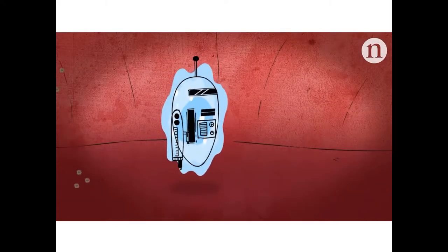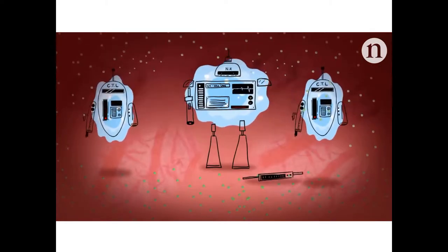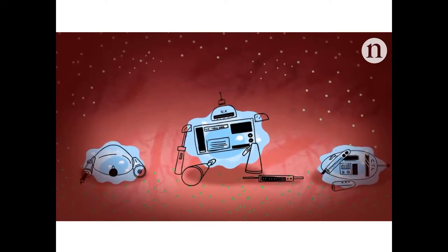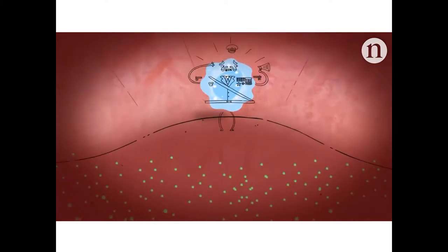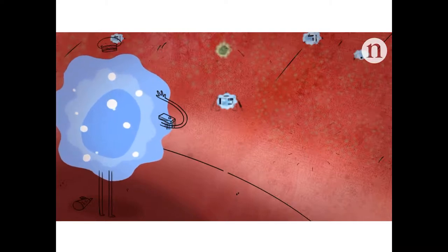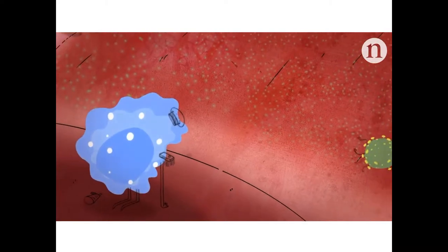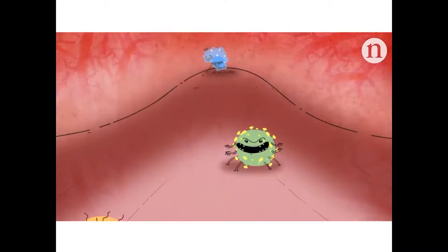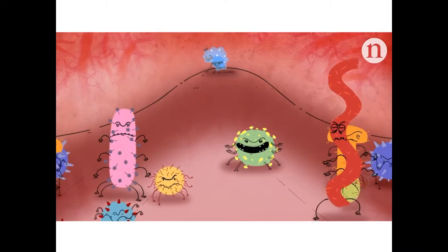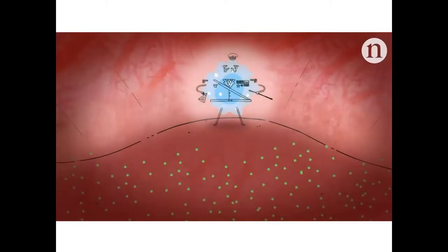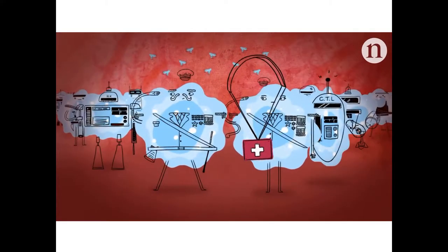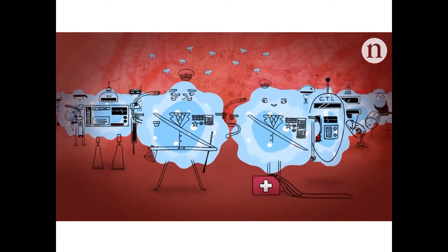Eventually the immune system wears out. Killer T cells, activated for too long, become exhausted and no longer respond to infection. The body also loses the ability to make new helper T cells to replace those killed in the fight, and their numbers plummet. The body becomes immunodeficient — a condition known as AIDS. Without treatment, exposure to otherwise harmless microbes can be fatal. We still have no way of eliminating HIV from the body completely, but antiretroviral drugs can allow the immune system to recover and live to fight another day.